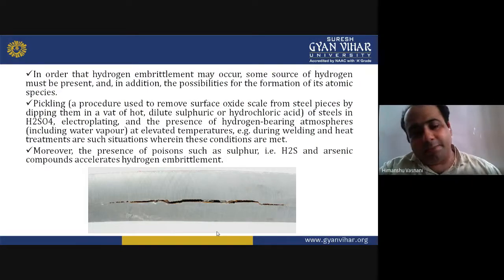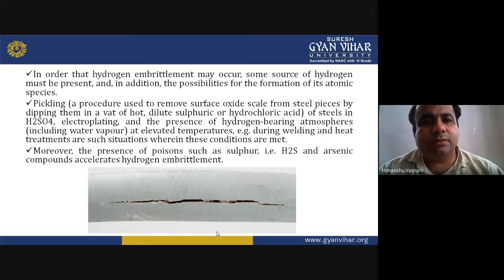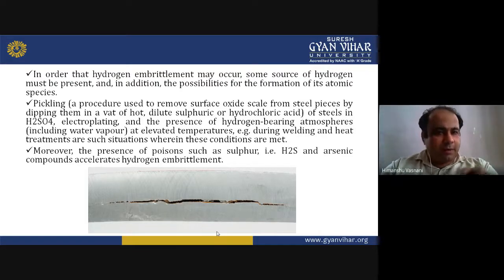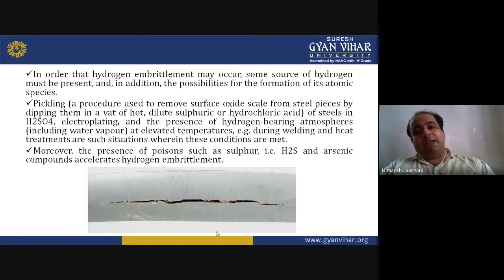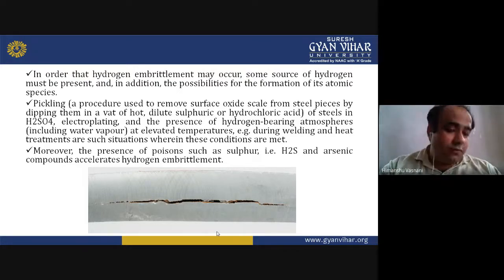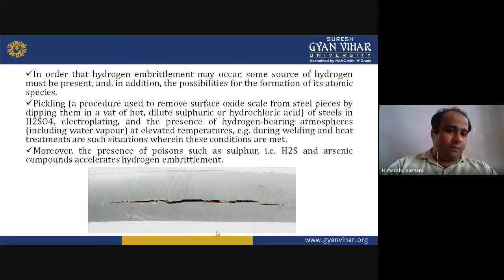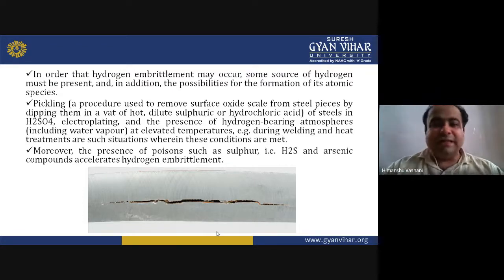In order for hydrogen embrittlement to occur, some source of hydrogen must be present. Sources include pickling — a procedure used to remove surface oxide scales from steel by dipping in hot dilute sulfuric or hydrochloric acid — electroplating, and the presence of hydrogen-bearing atmospheres including water vapour at elevated temperatures during welding and heat treatment.